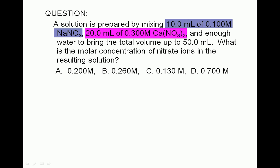What is the molar concentration of nitrate ions in the resulting solution? A. 0.200 molar, B. 0.260 molar, C. 0.130 molar, or D. 0.700 molar.